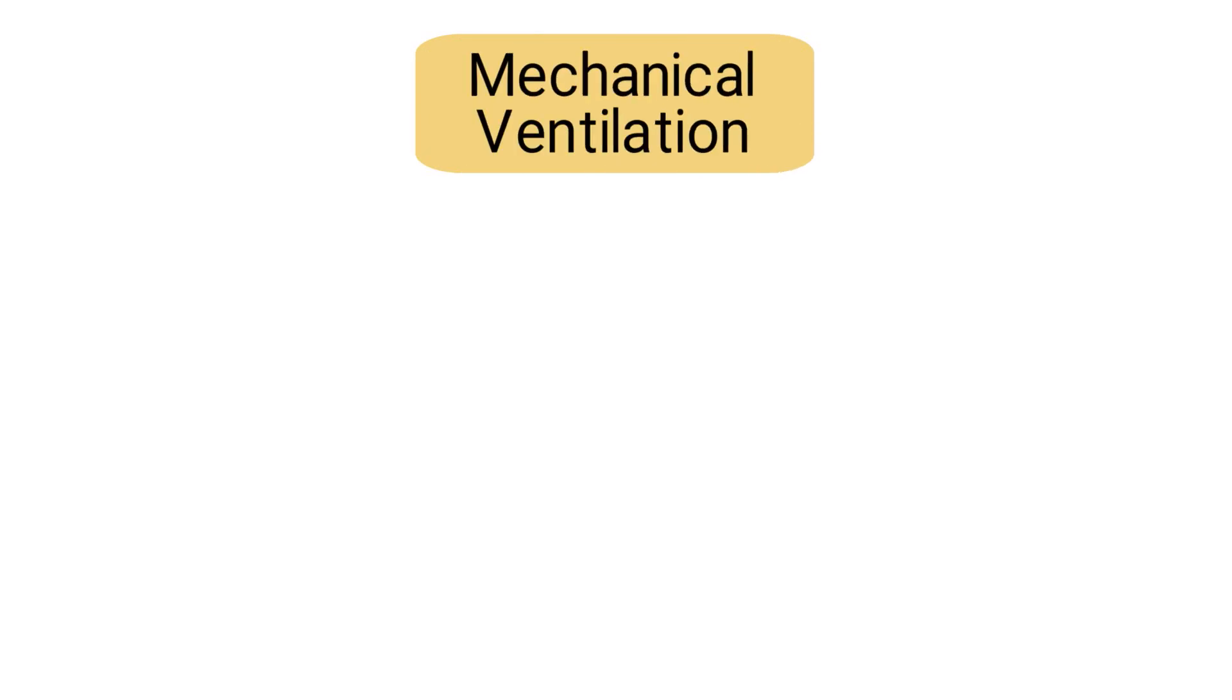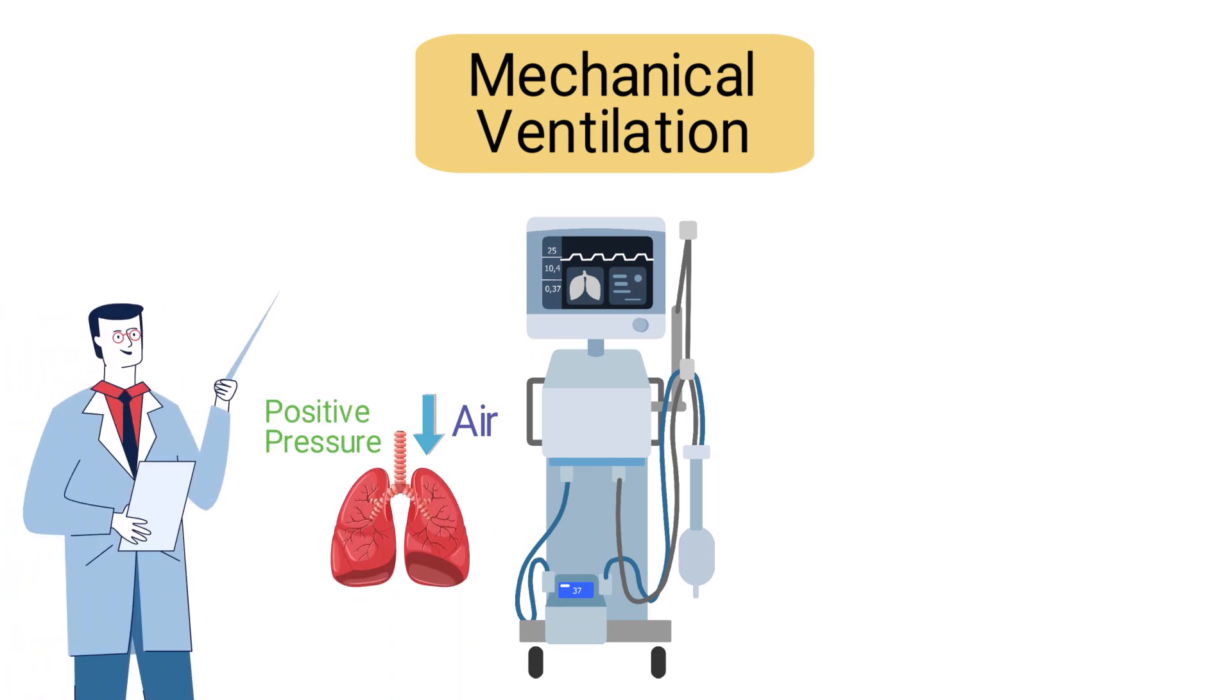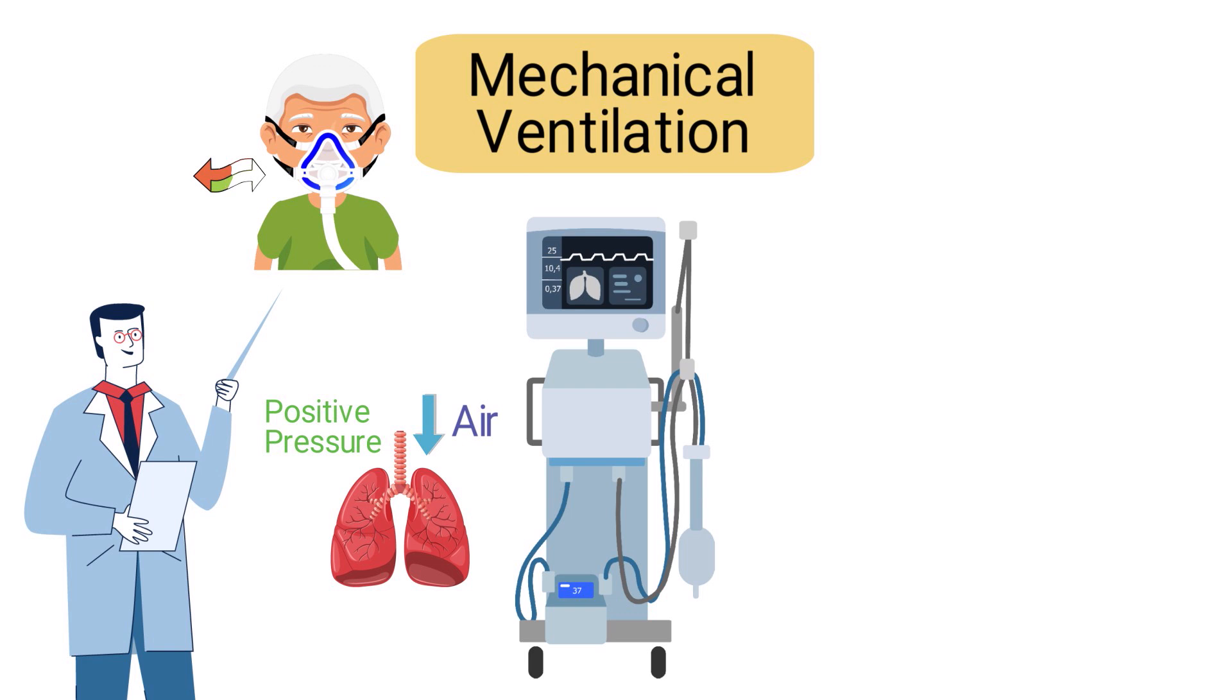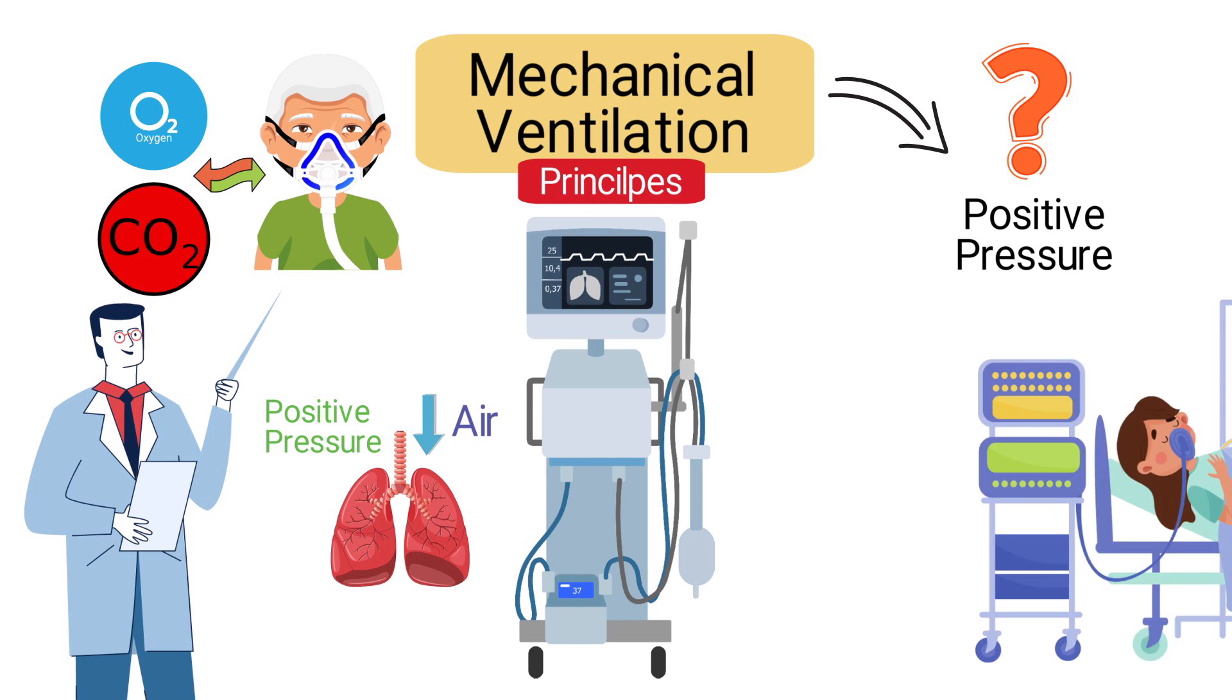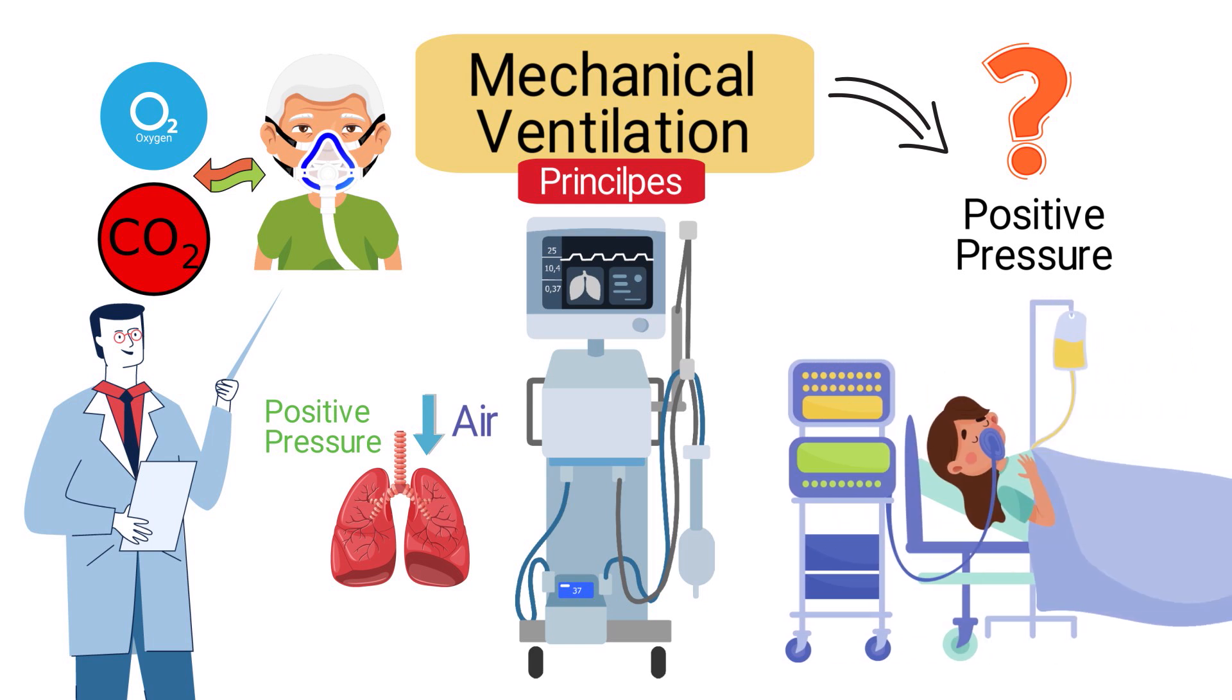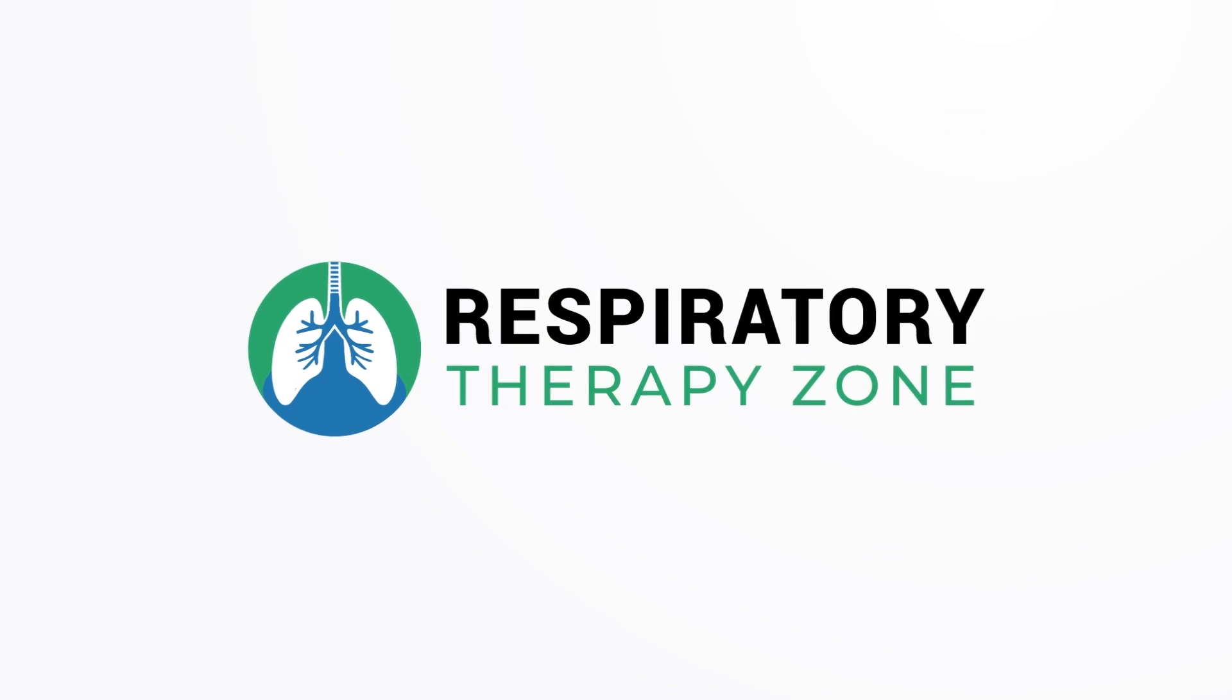Mechanical ventilation is the process of using a machine to move air into the lungs with positive pressure. This is necessary when a patient is unable to adequately exchange oxygen and carbon dioxide. The principles of mechanical ventilation determine how the machine is able to provide positive pressure and how it can be used to meet the specific needs of the patient, and that is the topic of this video.